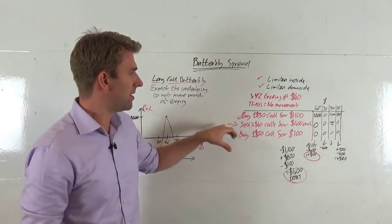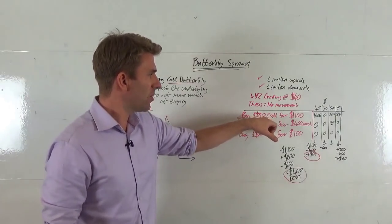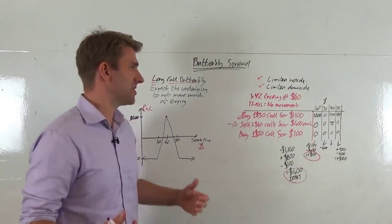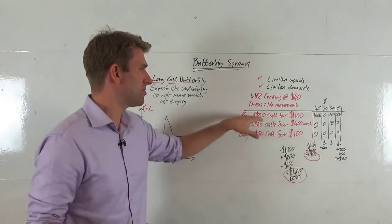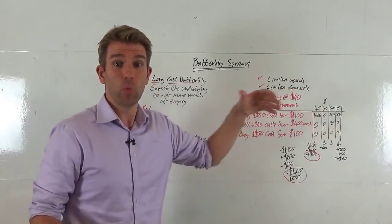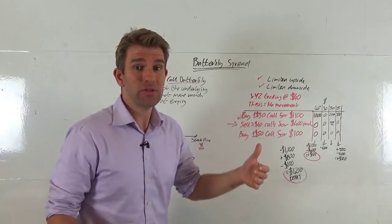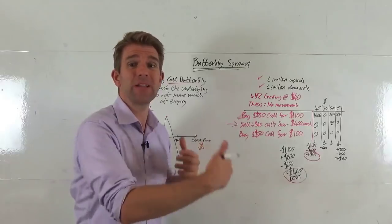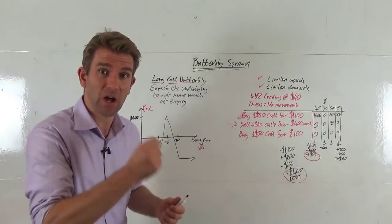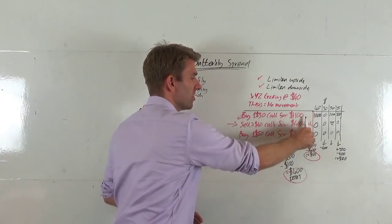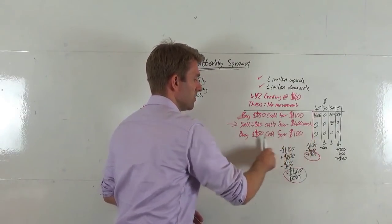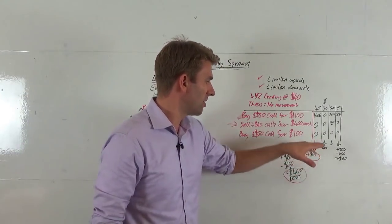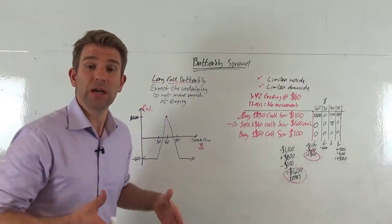To break it down further: we made $800 from selling the two $40 calls which expired worthless. The $30 call we bought is worth $1,000 but we paid $1,100 for it, so we lost $100 on that leg. We also lost $100 on the $50 call which expired worthless. So $800 minus $100 minus $100 equals $600 profit. That's the best-case scenario — the stock finishes right at $40.